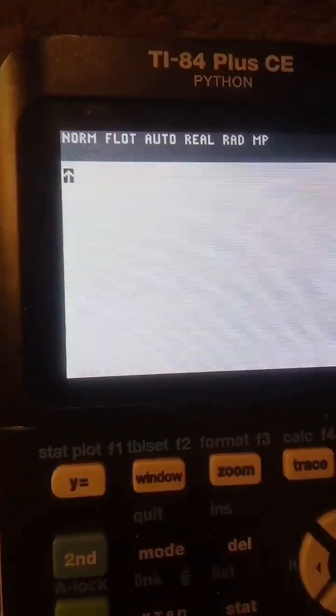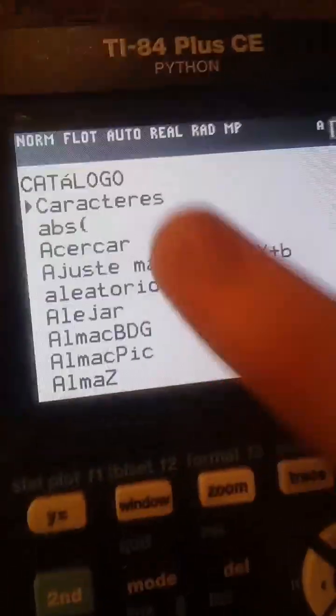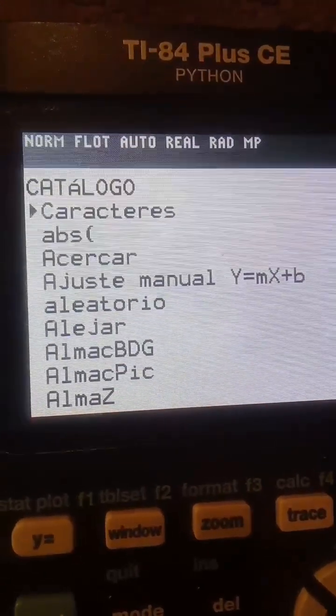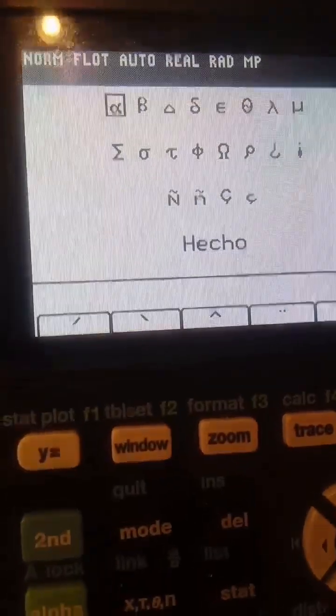Then press second, zero. So you see that there is a new option up at the top. That's what you want to click. So you notice that there are lowercase letters in here.